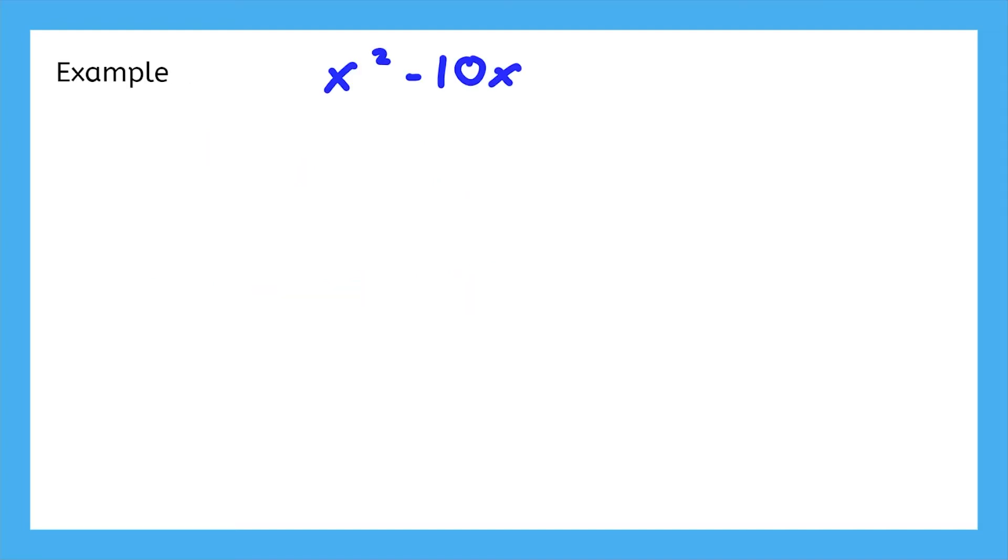Time for some examples. Our goal is simple. Add something to this expression so we can factor it into a squared binomial. Just like last time, we have to figure out what the middle term could be split into.